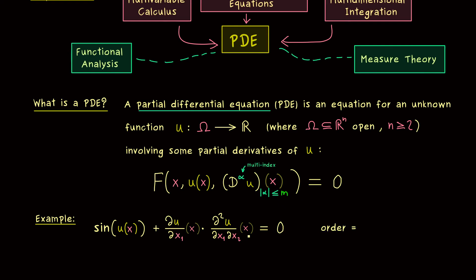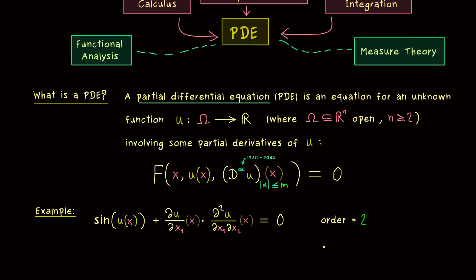And as before everything here is evaluated at the point x. And there you see the highest order for the partial derivatives, this m that is involved here, could be chosen as 2. So this is the minimal choice for our m, and therefore we say that this PDE has order 2.